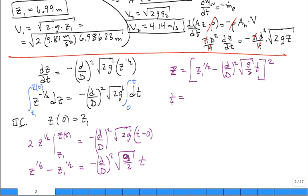You can keep on. You can put z equals z1 to the 1 half minus d over capital D squared, not square root, squared. Here is z as a function of t. Or let's solve for t. t is a function of z. You have z1 to the 1 half minus z to the 1 half divided by d over capital D squared, square root of g over 2.